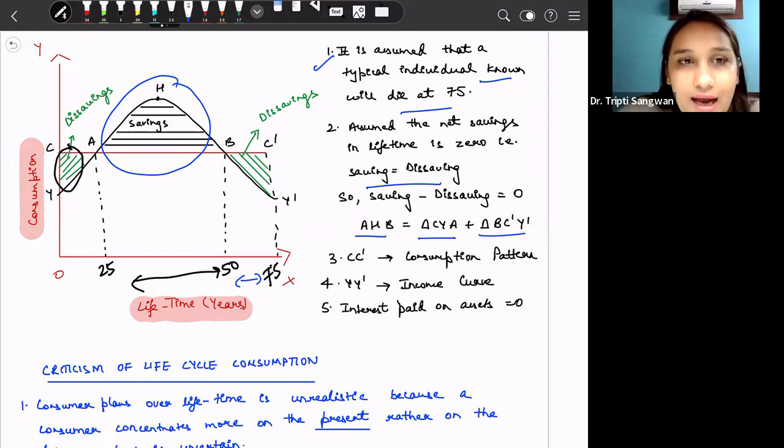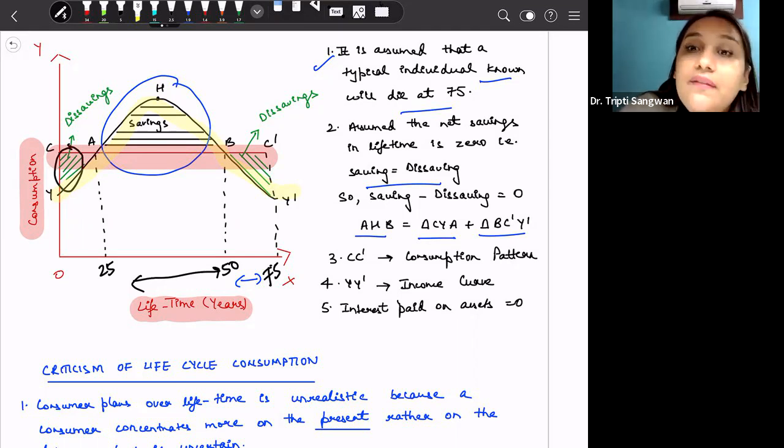This C, C dash, this refers to the consumption of an individual. And this curve of Y, Y dash, this is his income curve. And we are assuming here for simplicity that the interest paid on the assets is 0. Interest received by the consumer on his savings is 0. So this was life cycle consumption theory.